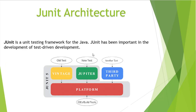Before proceeding forward, let us first see what JUnit is and what is the architecture of JUnit. Before everything, let us first talk about some basic problems in development. Let's say you are developing an application and you need to test that particular application — you need to test the particular logic, whatever you are developing. One way is you can create manual test cases and then, when you have completed your logic, you can apply those manual test cases and verify whether everything is working fine or not.